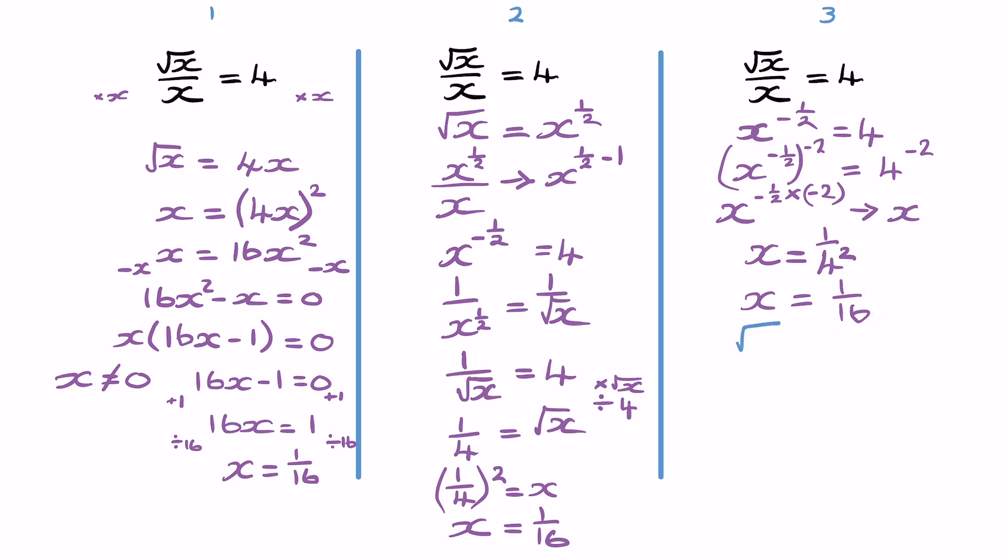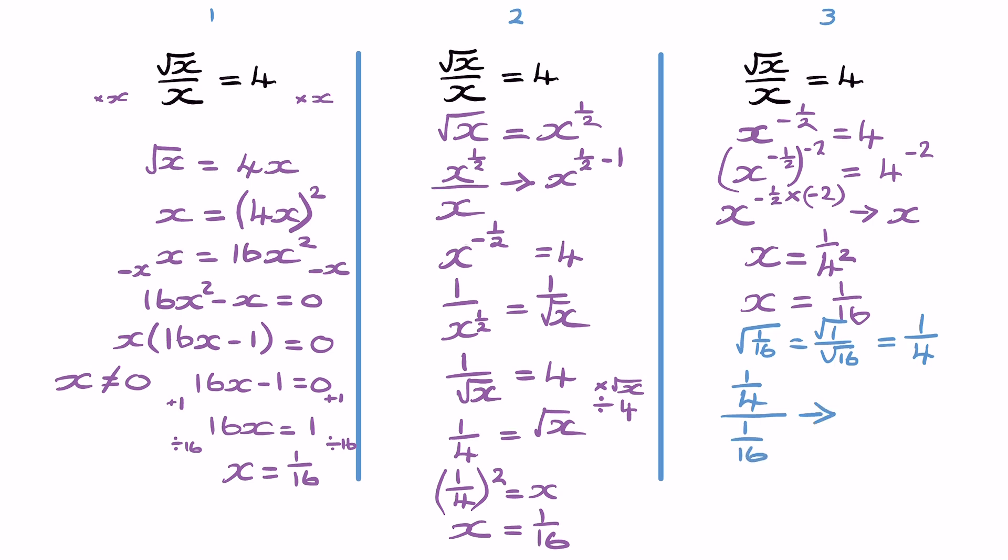So that means root 1 over 16, which is the same as root 1 divided by root 16, which equals 1 over 4. 1 over 4 divided by 1 over 16. So if I wrote that out in the long form, that's actually a quarter divided by a 16th.